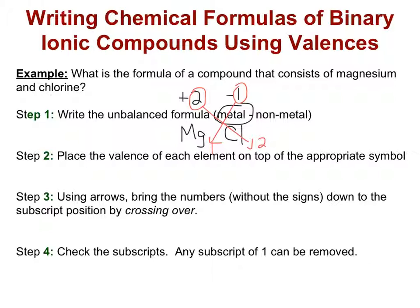And then what we want to do is look at our subscripts and check to see one, can they be reduced to a lower whole number ratio, and two, we can get rid of any subscripts with the number one. That means that our formula for this compound would be MgCl2.